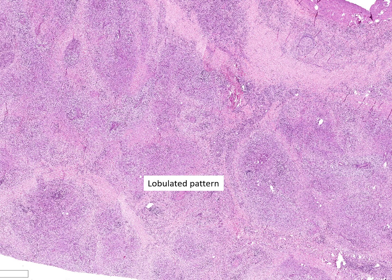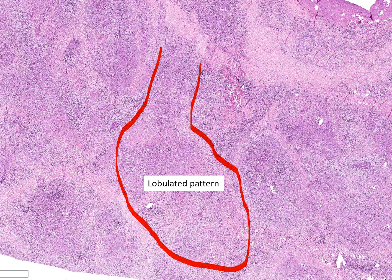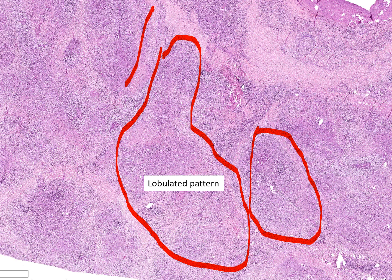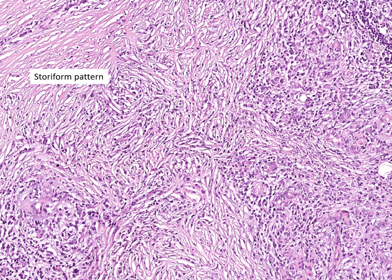This is a very low power image of the pancreas, and the thing that strikes me the most with these cases of type 1 autoimmune pancreatitis is this lobulated pattern of growth. Note these lobules here, here's another lobule, and these lobules almost fit together in a jigsaw pattern-like appearance. This is very different from pancreatic adenocarcinoma, which is a very close clinical mimic. Pancreatic adenocarcinomas almost never show this lobulated pattern of growth.